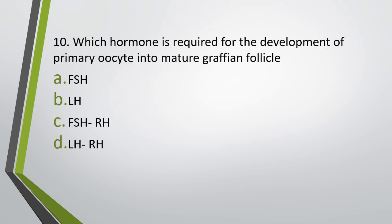Question number ten. Which hormone is required for development of primary oocyte into mature Graafian follicle? FSH, LH, FSH releasing hormone, or LH releasing hormone. Correct answer is option A — FSH, or follicle stimulating hormone.